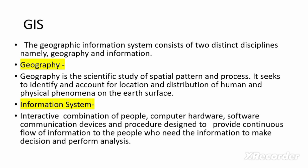Now, information system. An information system is an interactive combination of people, computers, hardware, software, communication devices, and procedures designed to provide a continuous flow of information to people who need it to make decisions and perform analysis.